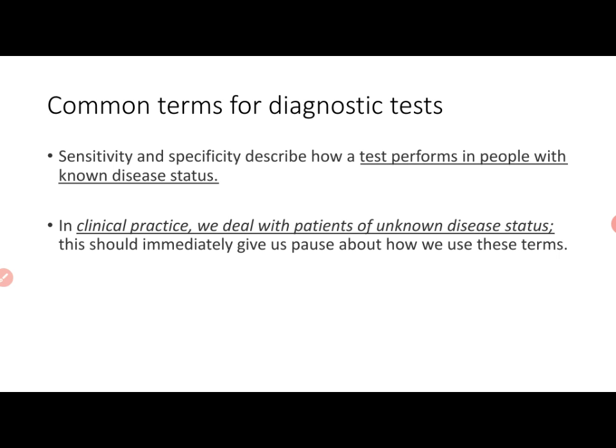Sensitivity and specificity describe how a test performs in people with known disease status — and that's an important consideration. But in clinical practice you deal with patients of unknown disease status. So you need to hit the pause button right there. If sensitivity and specificity describe test performance in people with known disease status, can you use those terms to describe the appropriateness of a test when applied to people with unknown disease status? The denominator has changed.